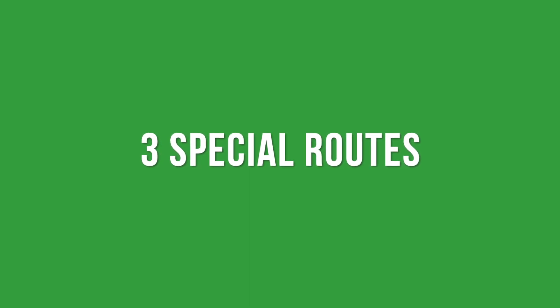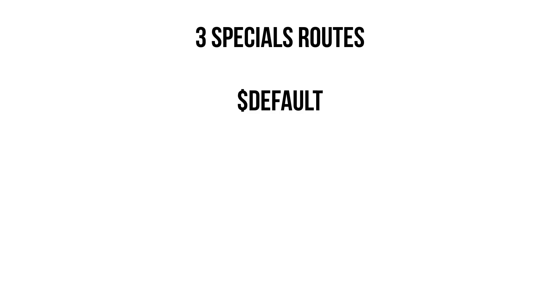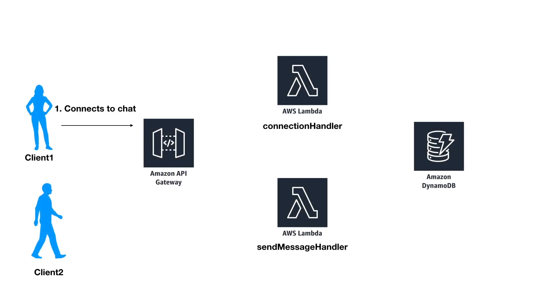The first thing we need to know is what a route is. A route is an important concept in API Gateway — it defines how API Gateway should handle a particular type of client request. A WebSocket API is composed of one or more routes. There are three special route keys that API Gateway provides, though we don't have to use all of them. The default route is used when nothing else matches. The connect route triggers when a client connects to the WebSocket API, and disconnect triggers when a client disconnects.